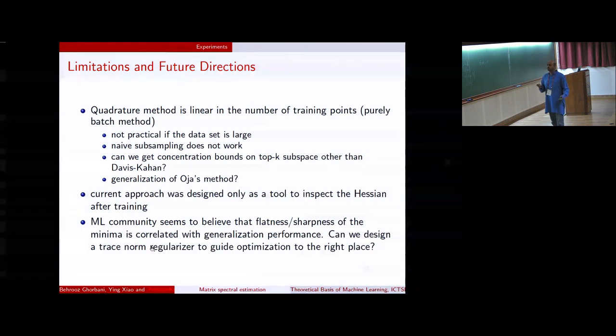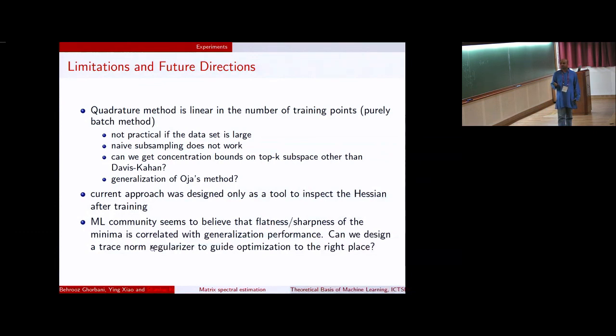The current approach was designed only as a tool to inspect the Hessian after training, but then the ML community believes that the flatness and sharpness are correlated with generalization performance. So one thing that we could see is, can we design some kind of a trace norm regularizer of your Hessian, and compute gradients through it to guide optimization to the right place? This is akin to some kind of Langevin dynamics that people have suggested to take it to flatter regions. So far, we don't know if there are any connections to that yet. Thank you for listening. I appreciate any questions.